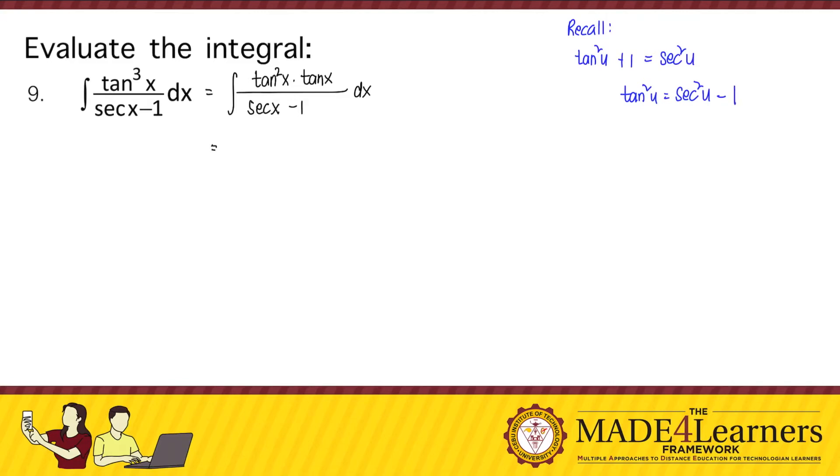So we can replace, we can express our tangent squared x here as the quantity of secant squared x minus 1 times the tangent of x over secant of x minus 1 dx.